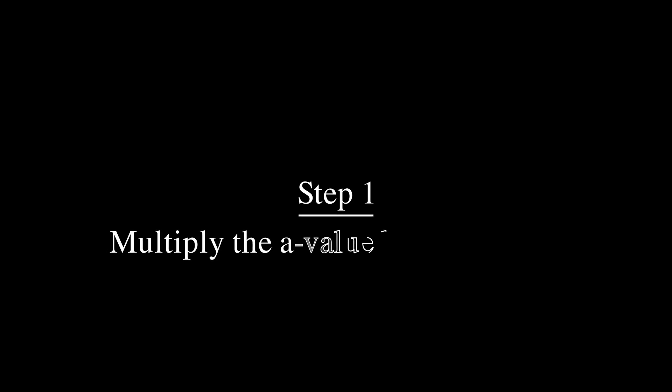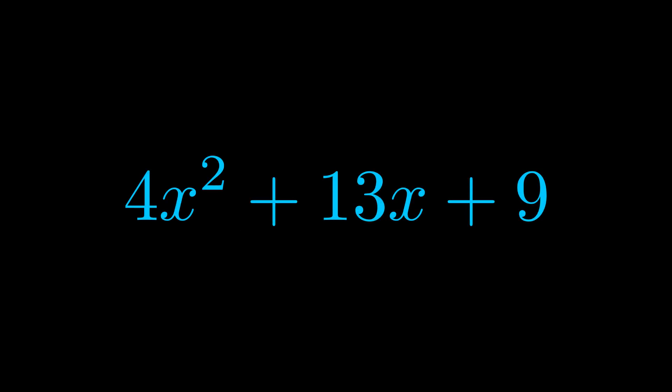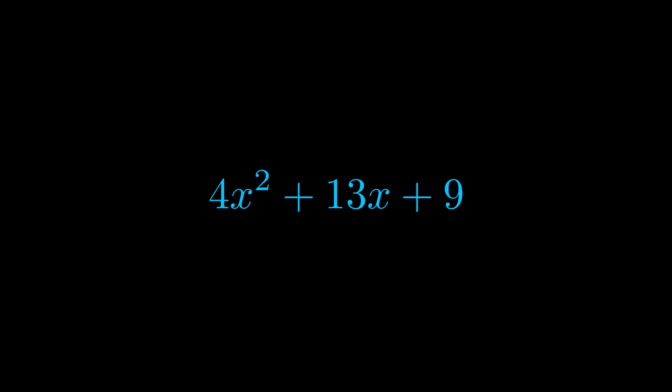Step one when factoring an equation of this form is to multiply the a value by the c value. Here we can see that our a value is the coefficient on the x squared term and our c value is the constant term.